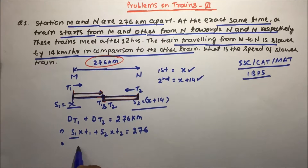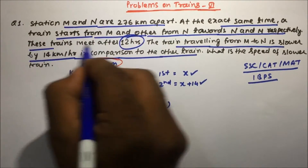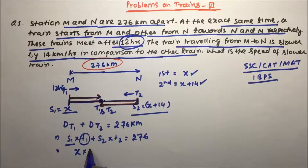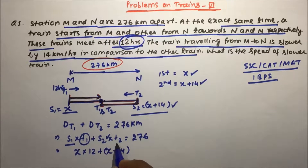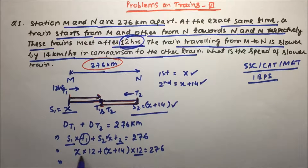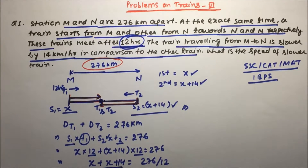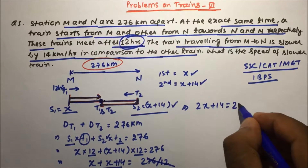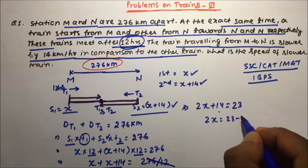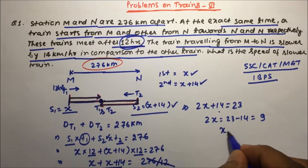Now: Speed 1 × Time 1 + Speed 2 × Time 2 = 276 km. Speed of train 1 is x, time is 12 hours; speed of train 2 is x+14, time is also 12 hours. So: 12x + 12(x+14) = 276. Taking 12 as common: x + x + 14 = 23, giving 2x + 14 = 23. Dividing 276 by 12 gives 23, so 2x = 23 − 14 = 9, and x = 9/2 = 4.5.